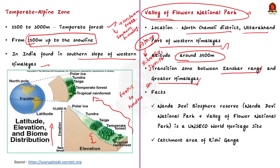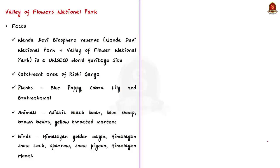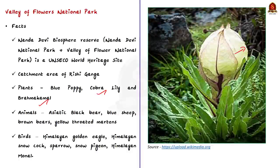Let us also see some facts about Valley of Flowers National Park. The Nanda Devi Biosphere Reserve, a UNESCO World Heritage Site, encompasses the Nanda Devi National Park and the Valley of Flowers National Park. The Valley of Flowers National Park comprises the catchment area of Rishi Ganga and the eastern tributary of Dauli Ganga, which flows into the Alaknanda River at Joshimath. It is home to over 650 flower species including the Blue Poppy, Cobra Lily, and Brahma Kamal. Brahma Kamal is the state flower of Uttarakhand and is also called the king of the Himalayan flowers. It is highly valued in Tibetan medicine and Ayurveda for its healing properties.